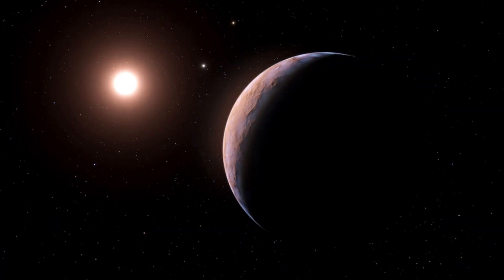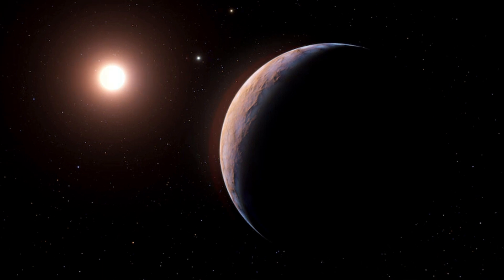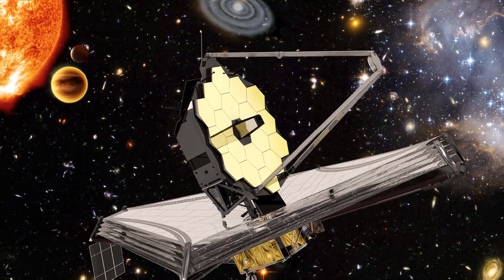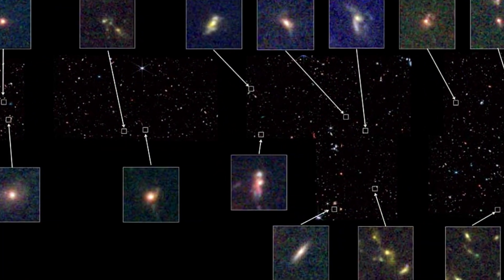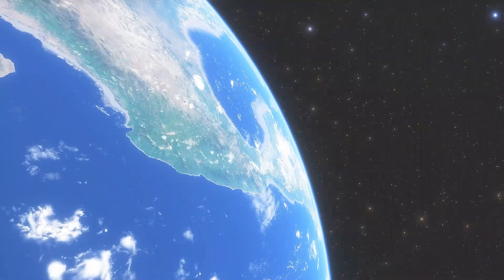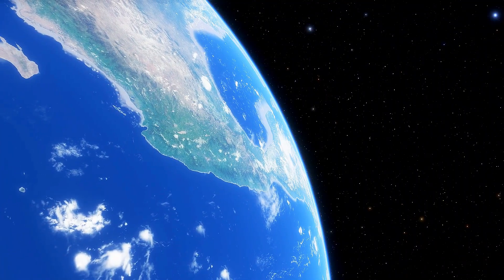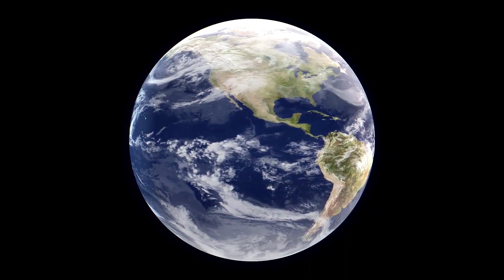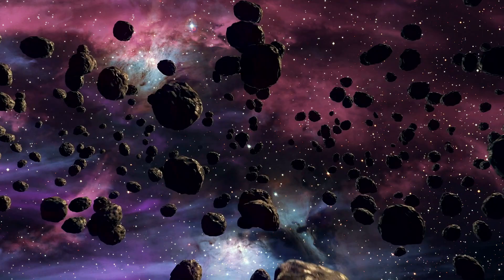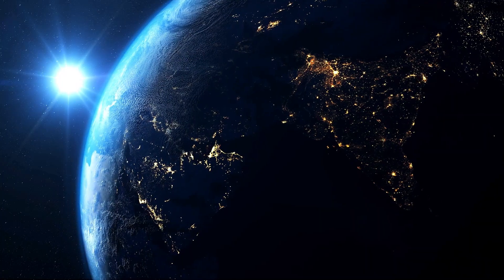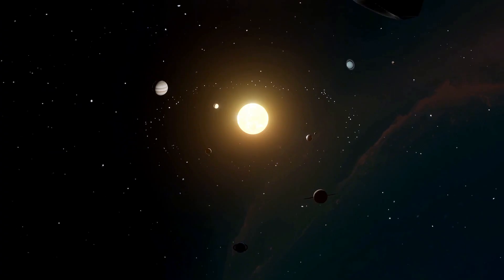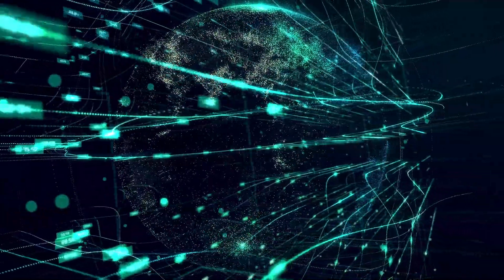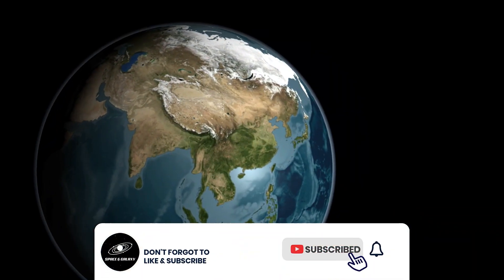In short, the James Webb Space Telescope just gave us the wildest view of Proxima b yet. This image has blown our minds with its crazy details and insights into this potentially habitable exoplanet. I mean, we're talking about water vapor, a temperate climate, and even a thin, hazy atmosphere that's similar to Earth's. But it's not just about finding life beyond our planet, it's about pushing our boundaries and seeing what we're capable of as a species. The exploration of space is about adventure, curiosity, and expanding our understanding of the universe and our place within it.